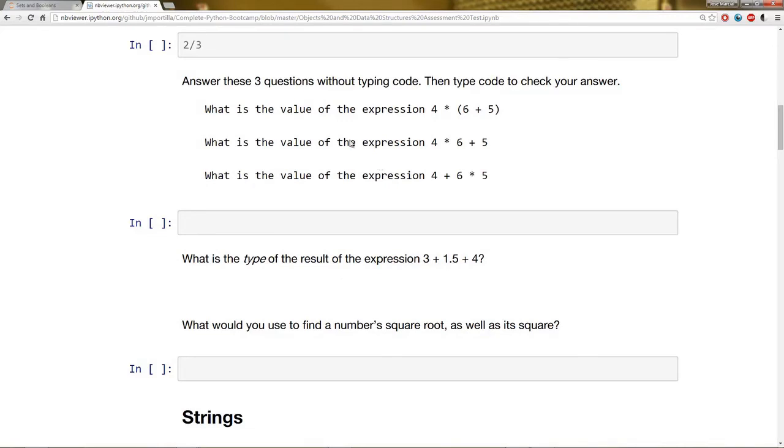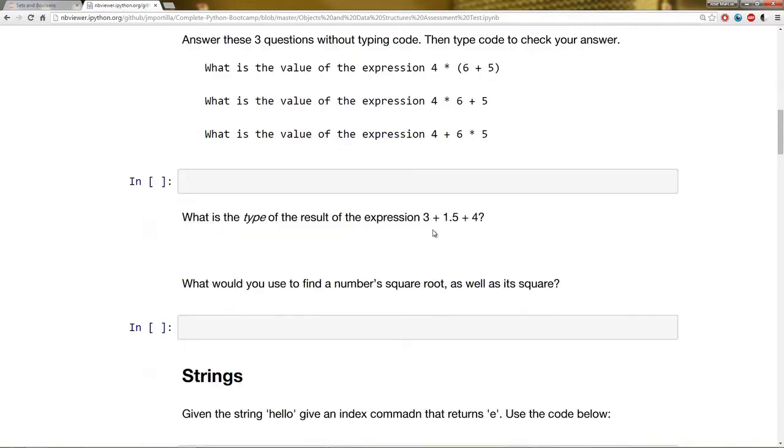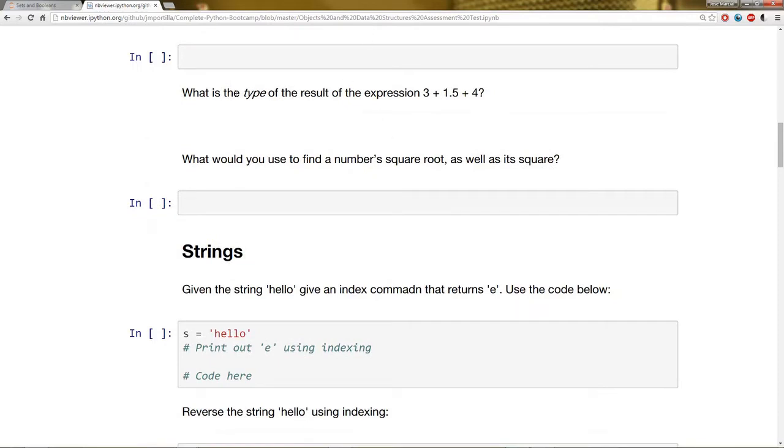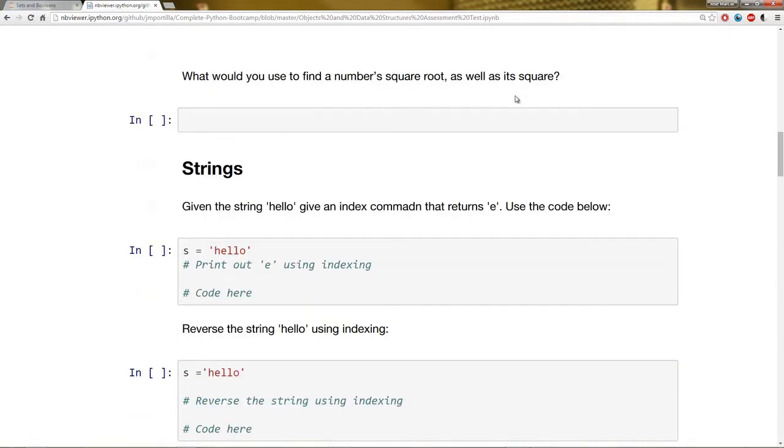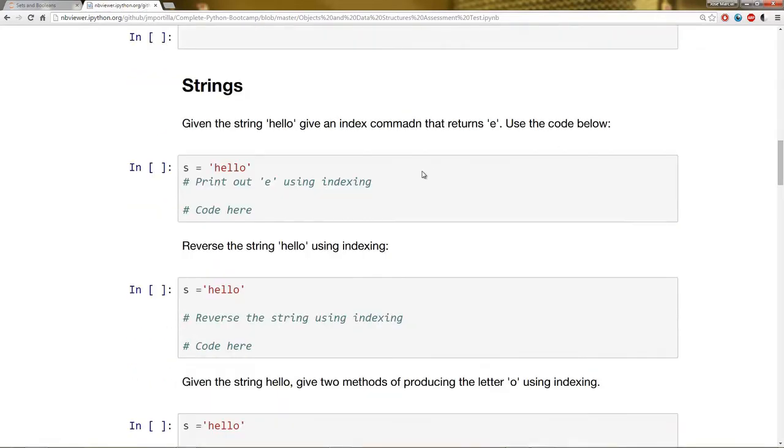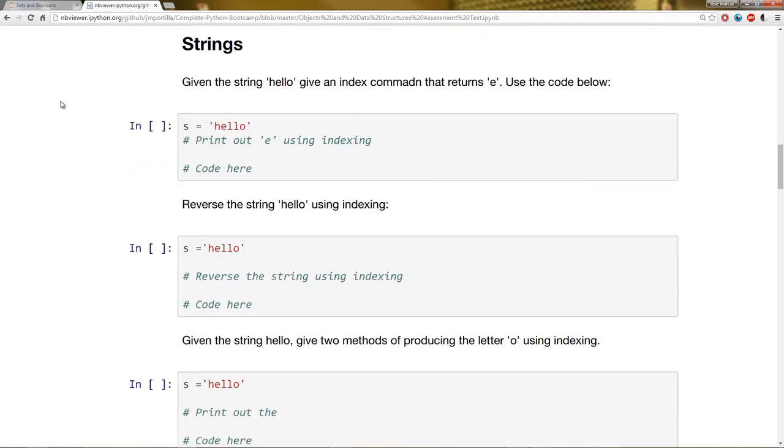Then next thing, I want you to answer these questions right here. What's the value of these expressions? And do it in your head without typing code. This has to do with order of operations to make sure you understand. And then you can type the code out to check your answer. Next question, what is the type of the result of the expression 3 plus 1.5 plus 4? After that, what would you use to find a number's square root as well as a square?